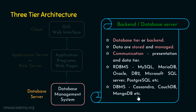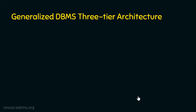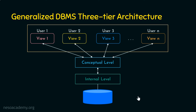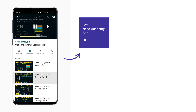We are done with all three tiers. Let's see the generalized DBMS three-tier architecture. We have the database at the physical level — the bottom-most level — called the internal level. The second level is the conceptual level with business rules. The top level is the user level or view level, where the user interacts with the database. Multiple views are possible at this level. In the next presentation, we will exclusively focus on the various view levels. Thank you for watching, bye-bye.